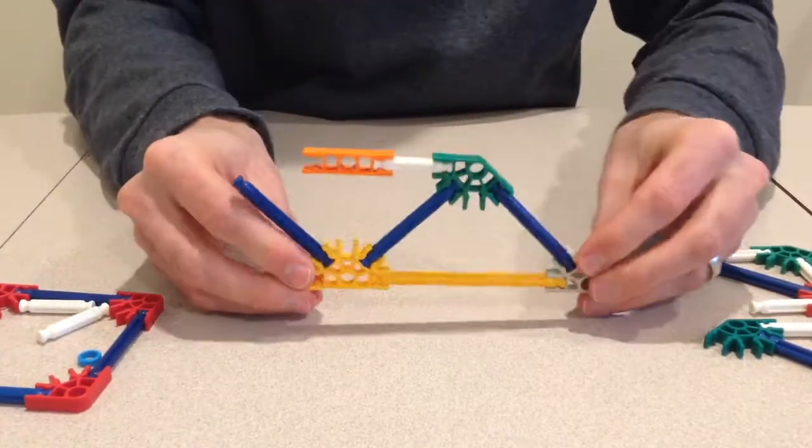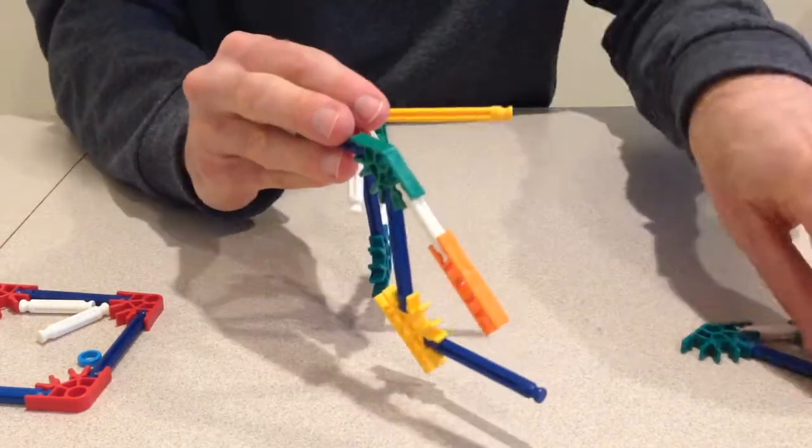With each wing complete I will now attach the float and secure each wing to the fuselage.